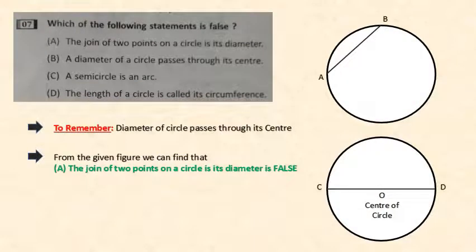In this question they have asked which of the following statement is false. Let's take a diameter of circle passes through its center. Yes it's correct. You can see in the second figure like CD the diameter passes through the center O. A semicircle is an arc. Correct. The length of the circle is called its circumference. Correct. So the false one is the join of two points on a circle is its diameter. We can take the two points A and B being joined but that is not a diameter, it is a chord.